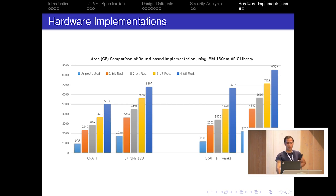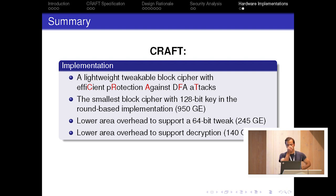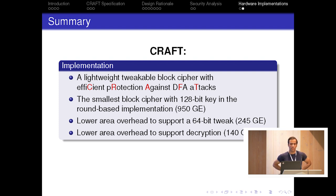To conclude: we designed CRAFT, a lightweight tweakable block cipher that is efficiently designed for protection against differential fault analysis attacks. As far as we know, it is the smallest block cipher with 128-bit key in a round-based implementation. With small area overhead, it supports a 64-bit tweak, supports decryption in the same structure as encryption, and has 124-bit security in the related-tweak model.